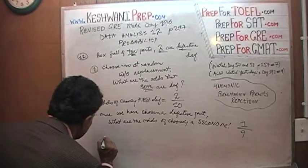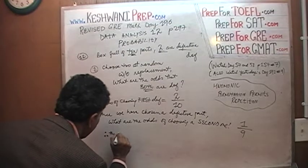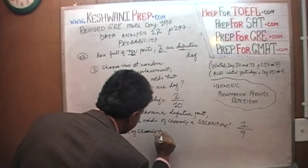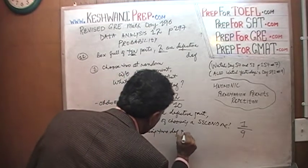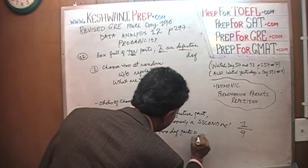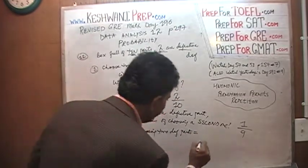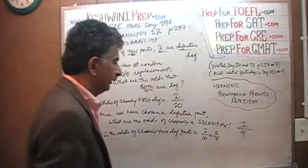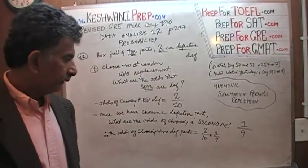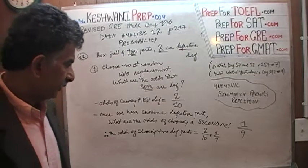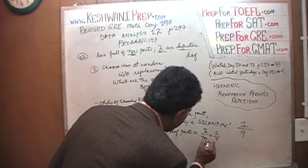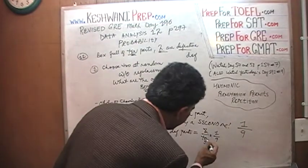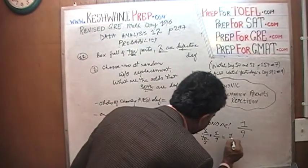Therefore, the odds of choosing two defective parts is 2/10 times 1/9 — the product of the two probabilities. If you reduce it: 2 divided by 10 gives you 1/5, and 9 times 5 is 45, so the odds are 1 out of 45.